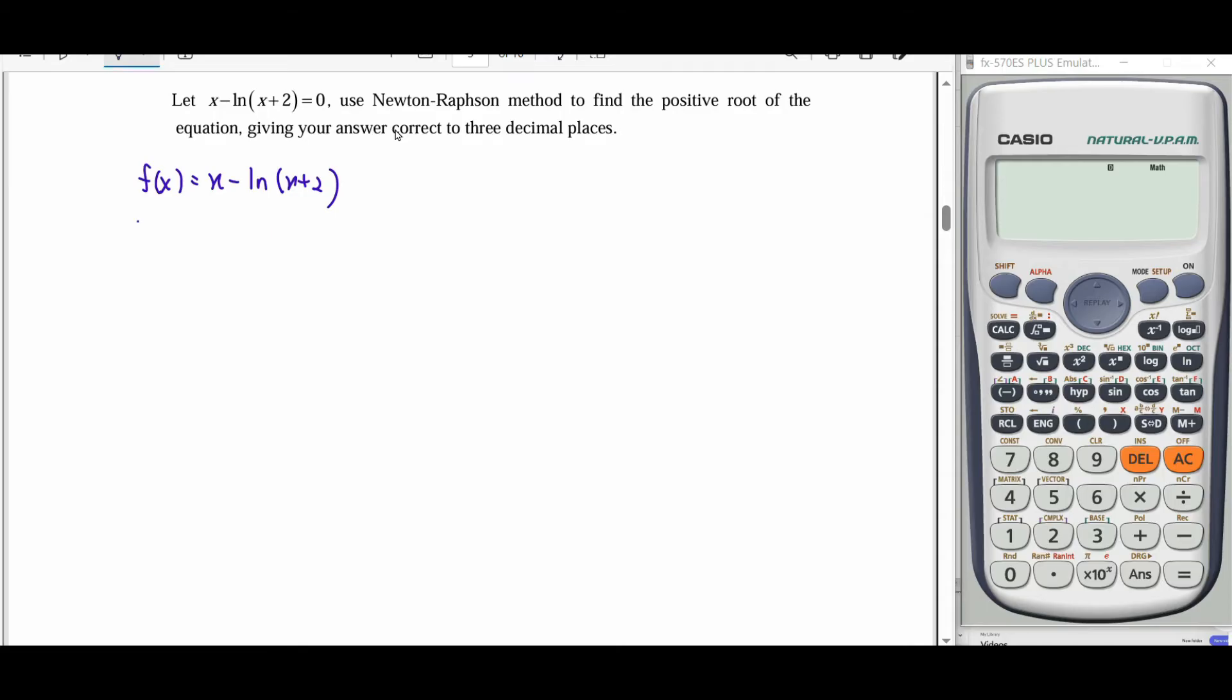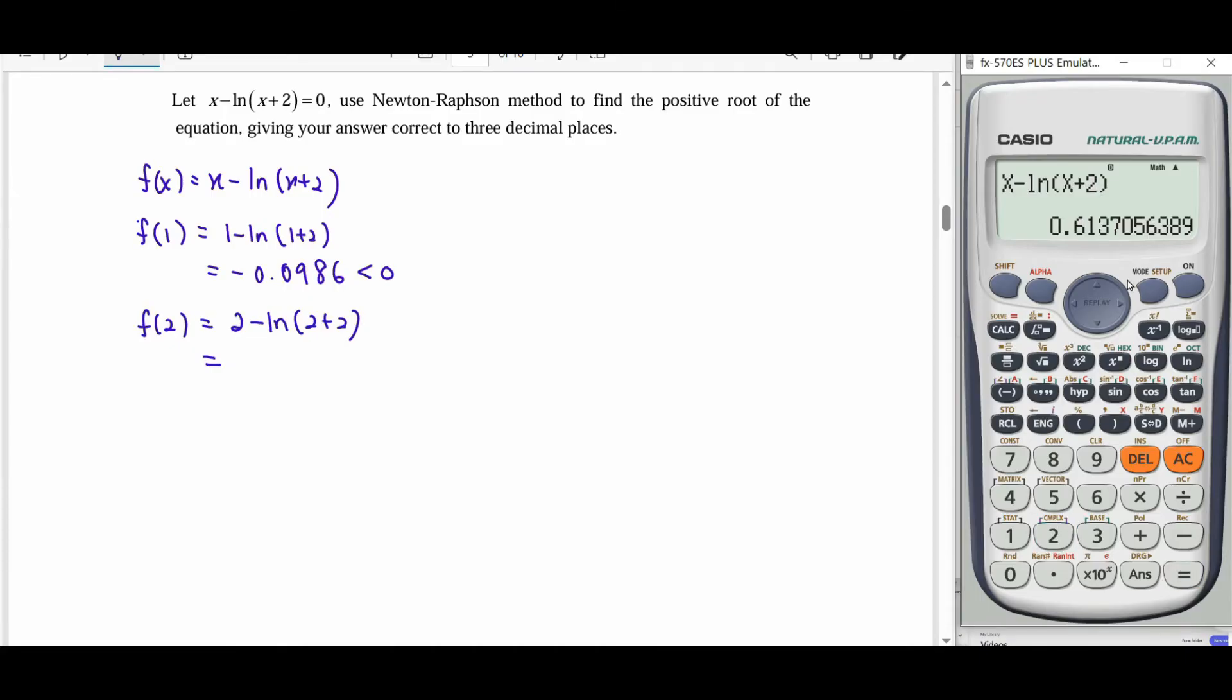Then we guess our roots first to find out the interval, a positive root in the interval. We try to substitute 1 and check f(1) = 1 - ln(1+2). Calculate for value of 1, it gives us a negative, so it is less than 0. We try to guess for value of 2, and we get a positive one.